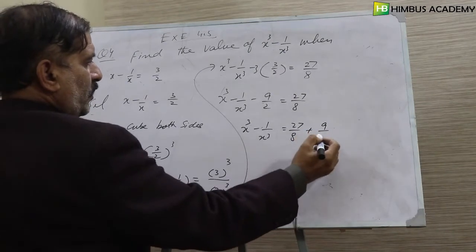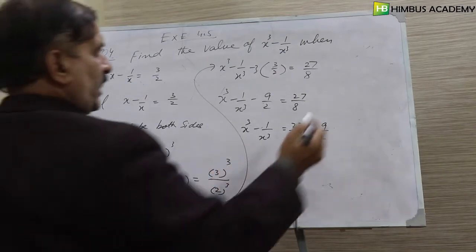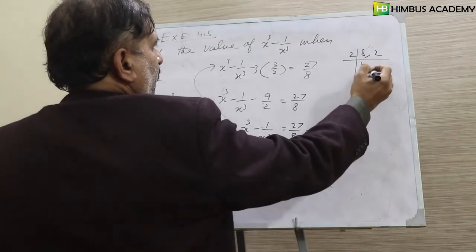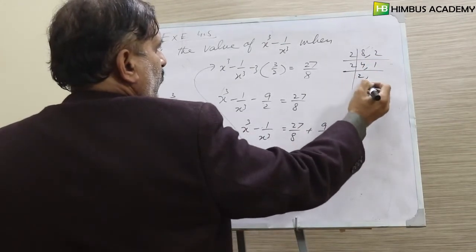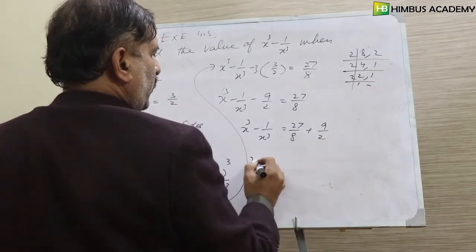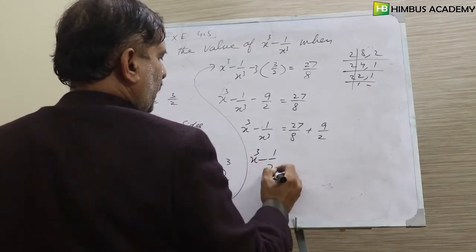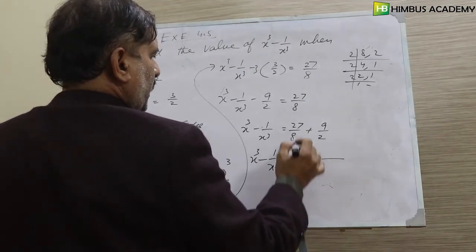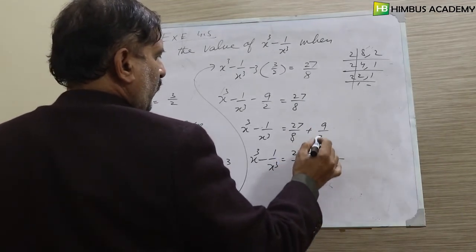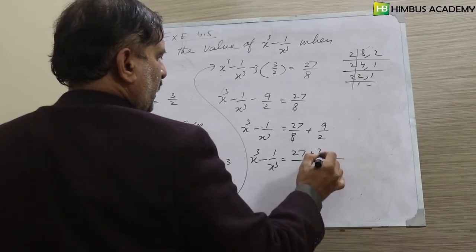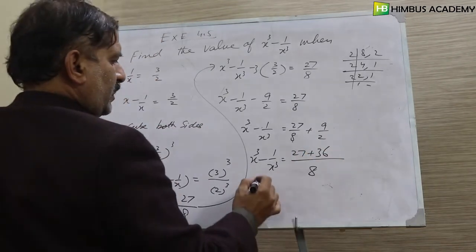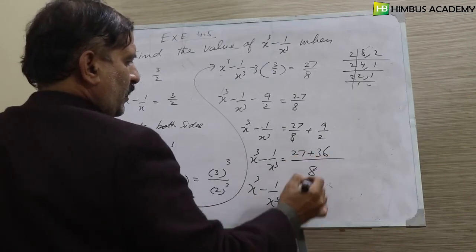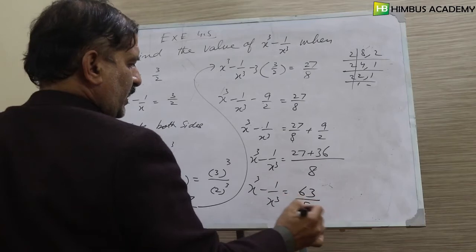So x cube minus 1 over x cube equals 63 over 8. That is the answer for part 1.